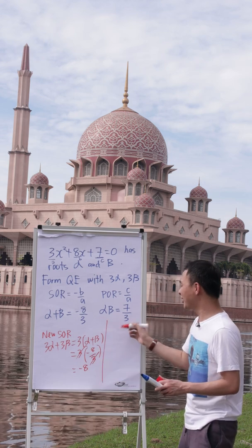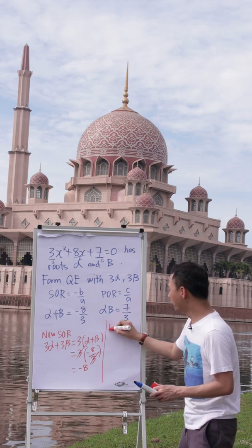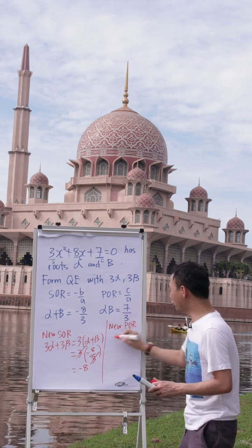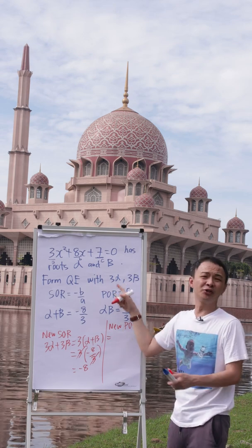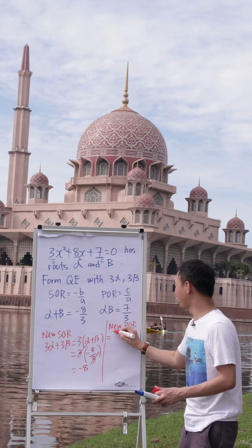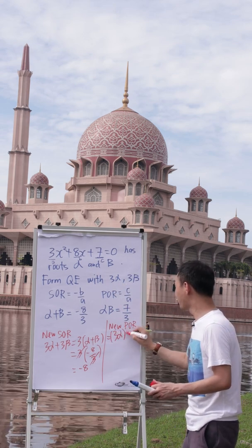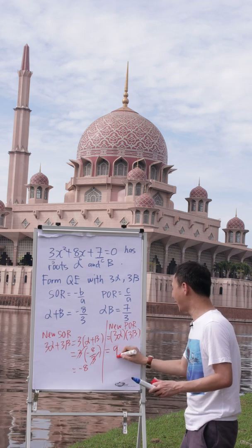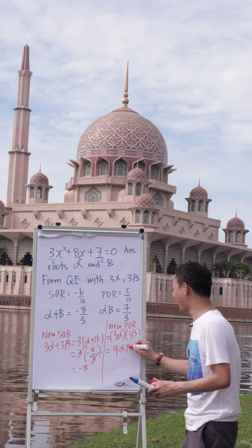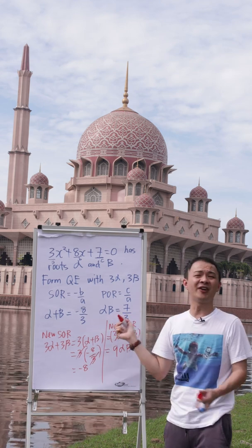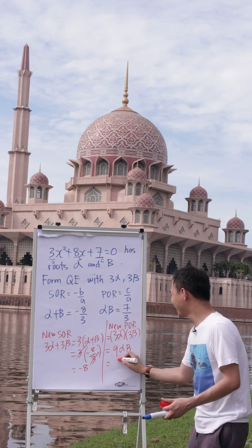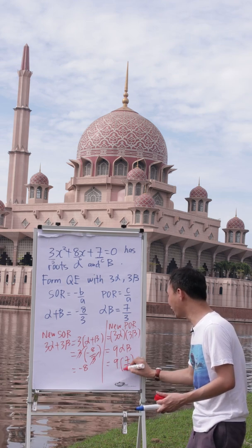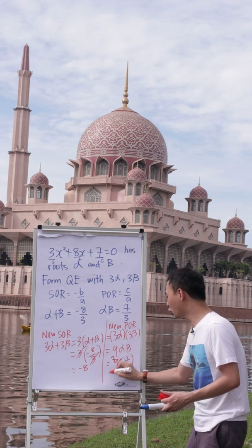Then I will do the same thing for the new product of root. The new product of root is 3 alpha multiplied by 3 beta. 3 times 3 gives 9 alpha beta, and alpha beta is 7 over 3. So if you simplify, you get 21.